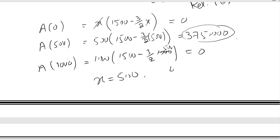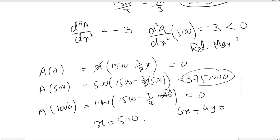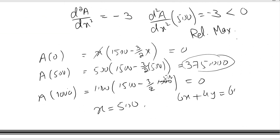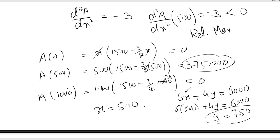Now substituting x equals 500 into the constraint 6x plus 4y equals 6000 and solving, we get y equals 750. So when y equals 750 and x equals 500, the area is at its maximum. These are the dimensions of the rectangular plot with greatest area.